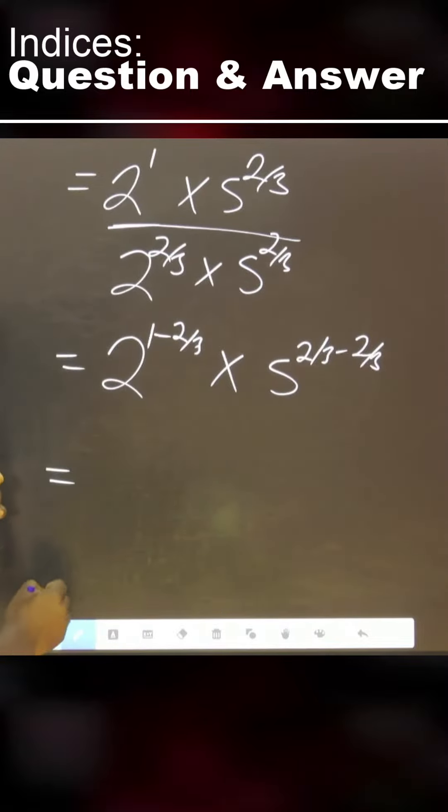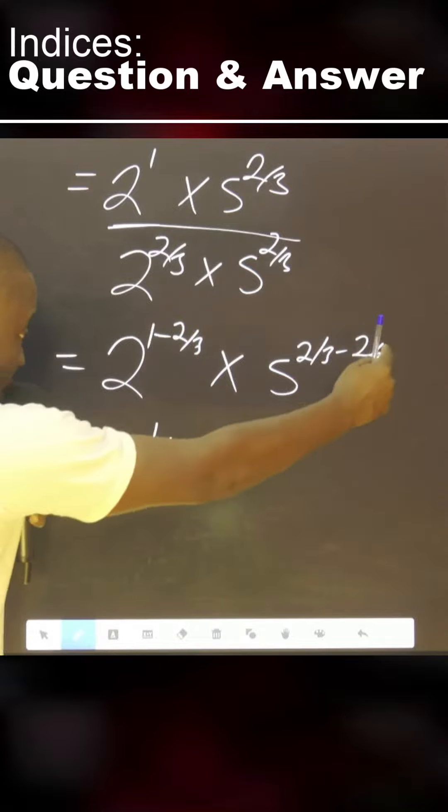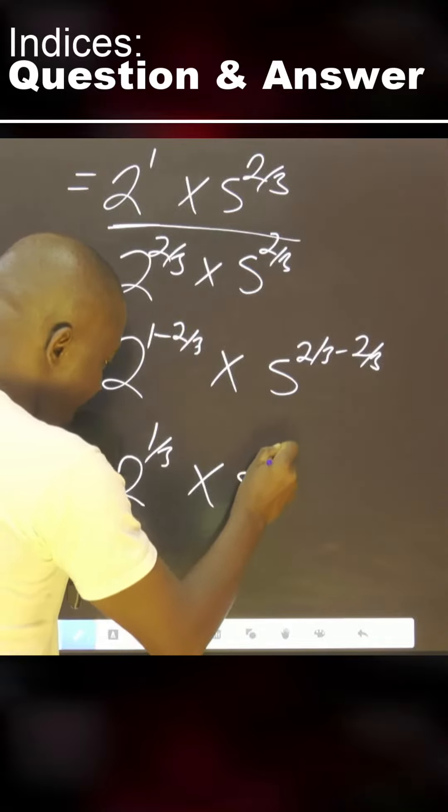That is to say, 2 raised to the power, this means 1 over 3. This simply means 0. 5 raised to the power 0.